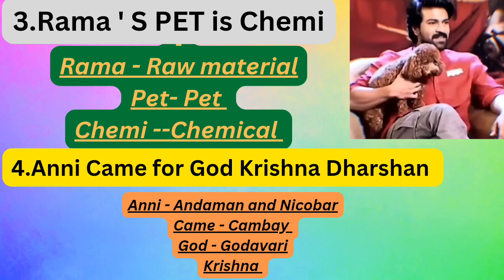The third shortcut uses actor Ram Charan Teja's name: 'Rama's pet is Chimmi.' Here, 'Rama' means raw material, 'pet' means petroleum, and 'Chimmi' means chemical. This means natural gas is used as a raw material in the petrochemical industries.